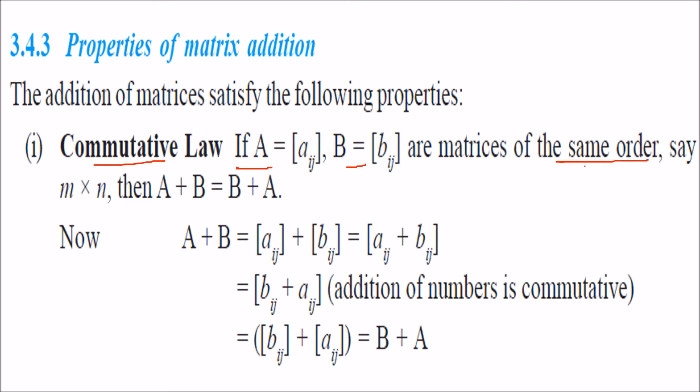If A plus B is there, you can commute B with A. That means A plus B is nothing but B plus A. This is the explanation: these are the elements.